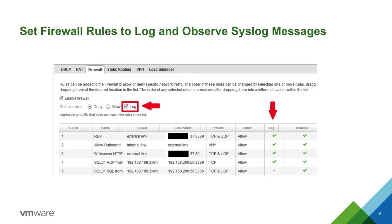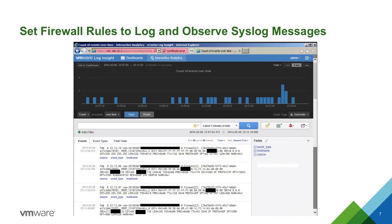Within the Edge gateway configuration in the vCloud Director interface, you can set your firewall rules to log the rules and default actions. After setting a firewall rule to log, we can now see messages appearing on our syslog server.